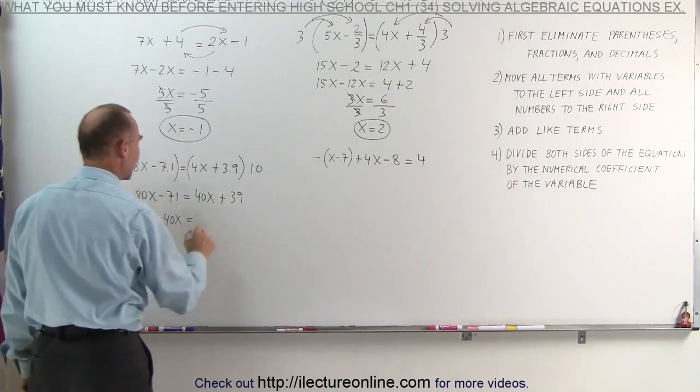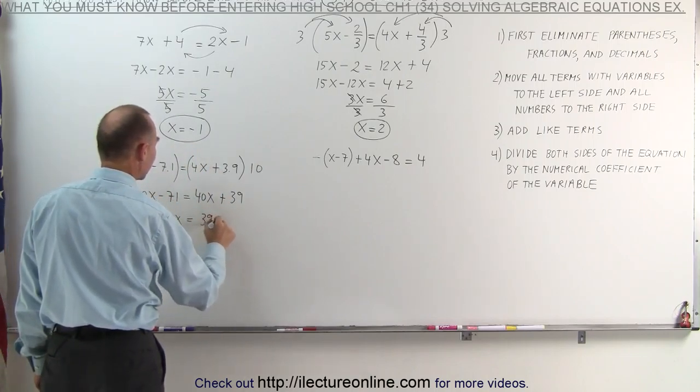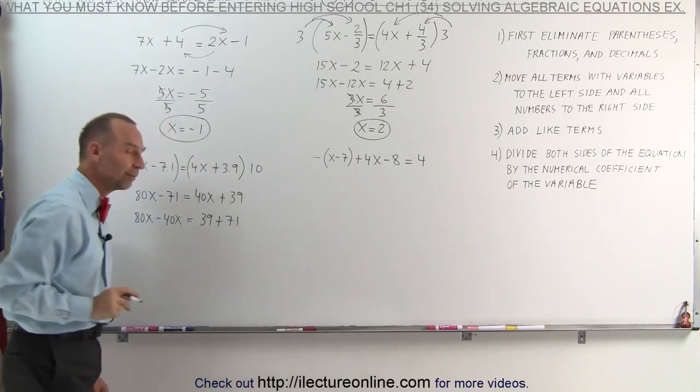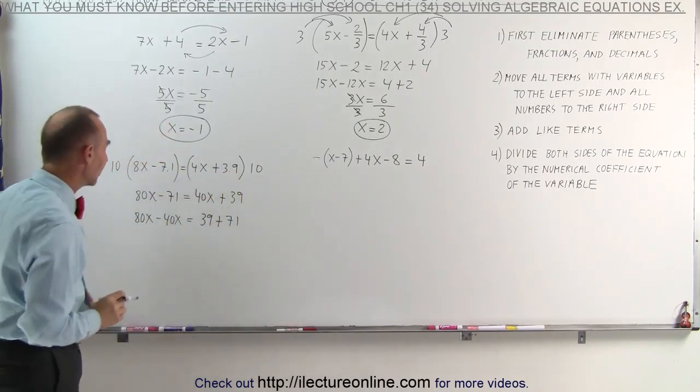And here we have 39 plus 71. The negative 71 becomes a positive 71. Now we combine like terms. 80x minus 40x is 40x.